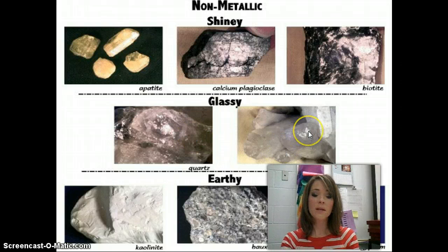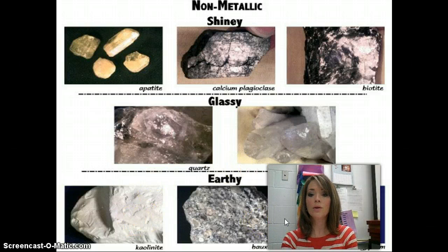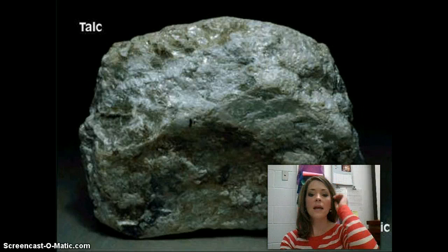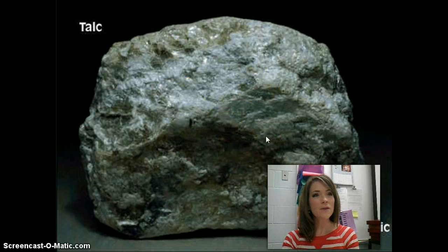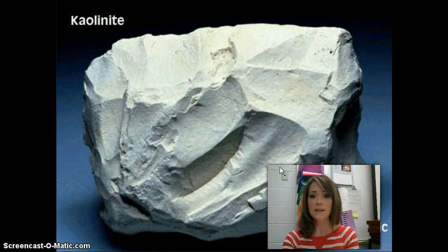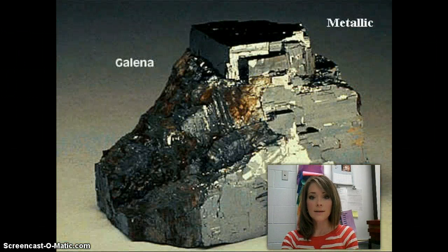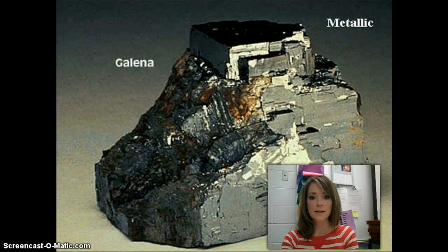Here are some examples. Talc has a non-metallic, pearly luster — it has a kind of shimmery appearance. Kaolinite is also non-metallic and is described as earthy non-metallic, because it looks just like a regular dull rock. Galena has a metallic luster — it's silvery and looks like a piece of metal. Now for some practice: on your notes page at the bottom, list 'Mineral 1' and identify its luster. Your four choices are metallic, non-metallic earthy, non-metallic glassy, or non-metallic pearly.